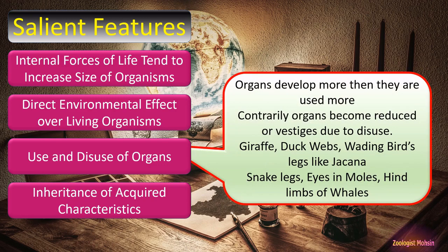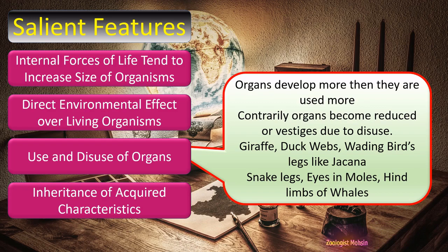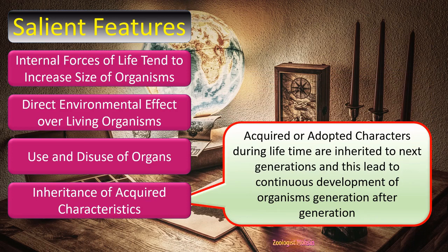In the third postulate, Lamarck described the use and disuse of organs — a very famous idea. Organs develop more when they are used more. On the contrary, organs become reduced or vestigial due to disuse. Giraffe necks, duck webs, wading birds, and legs like the jacana are examples of use of organs, while snake legs, eyes in moles, and hind limbs of whales are examples of disuse of organs.